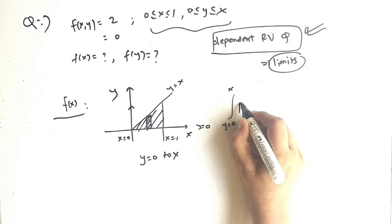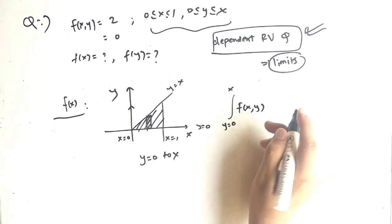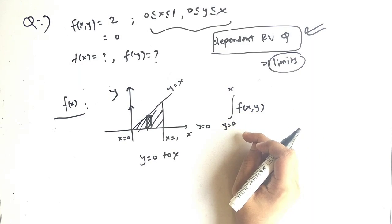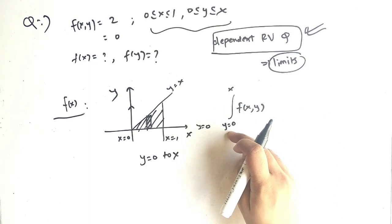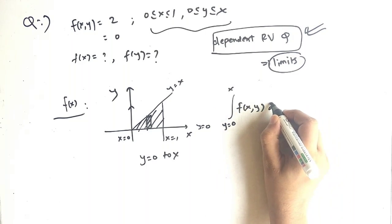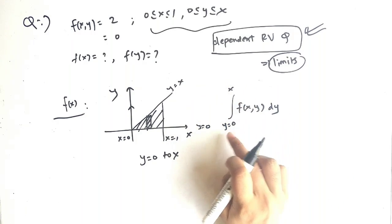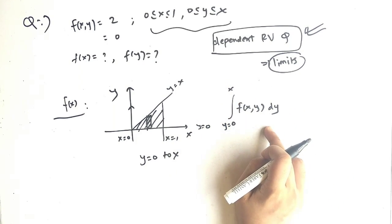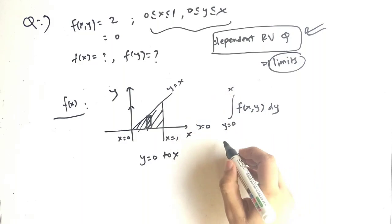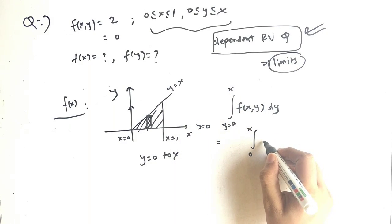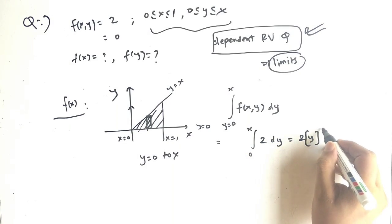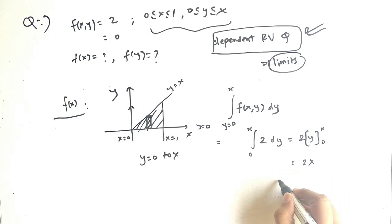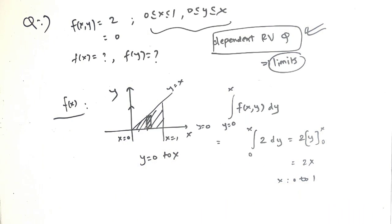So the integral is from y equals 0 to x of small f of x comma y dy — note that small f means PDF, capital F means CDF. Substituting f of x comma y equals 2: integral from 0 to x of 2 dy equals 2y evaluated from 0 to x, which gives 2x. Since x ranges from 0 to 1, small f of x equals 2x for x in [0, 1].